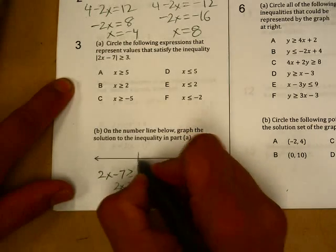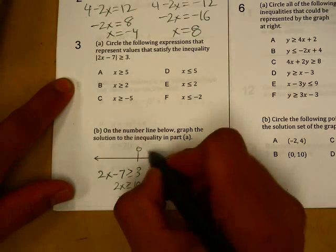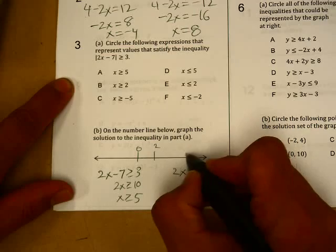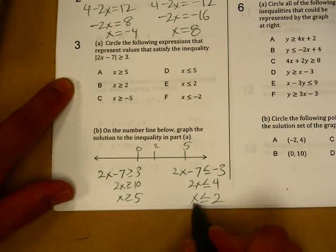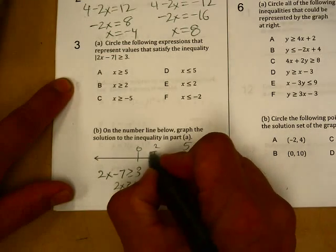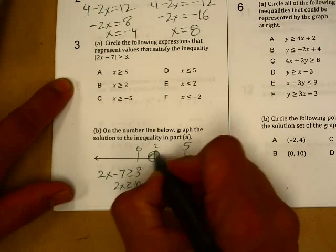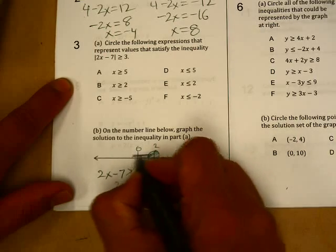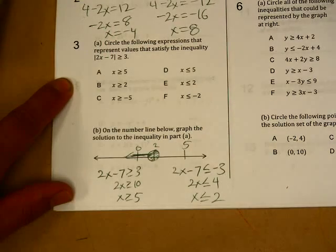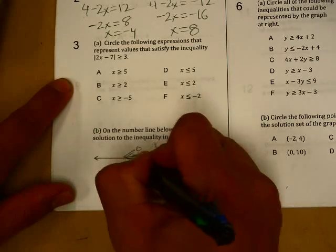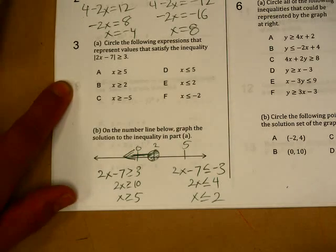So we'll have a zero right here. We have a two, and we have our five. x is less than or equal to two. So we draw a circle, fill it in, and we would have our shaded region going south or going west.